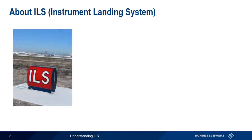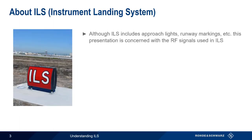ILS, the instrument landing system, consists of multiple components. This includes things like approach lighting, runway markings, etc. But in this presentation, we'll only be concerned with the radio frequency signals that are used in ILS. These signals can be divided into three groups.